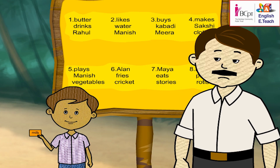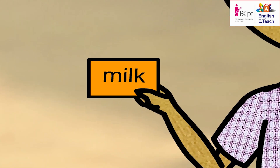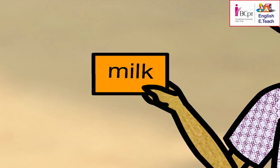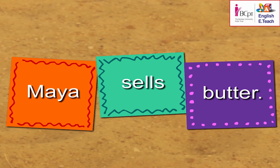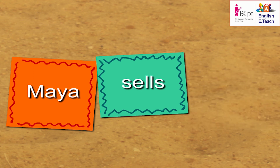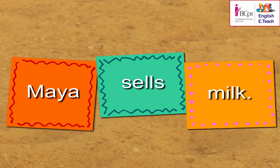Milk. Now, replace one word in the sentence with 'milk' to make another meaningful sentence. Good. Now read the sentence. Maya sells milk.